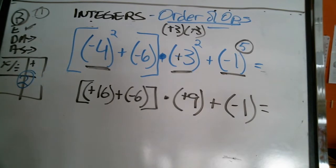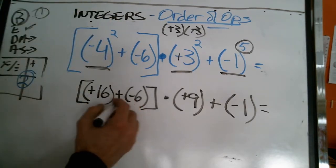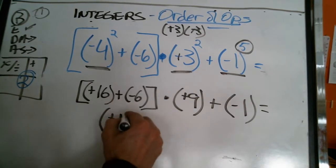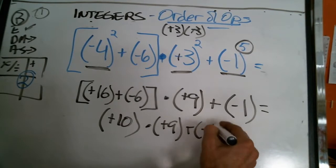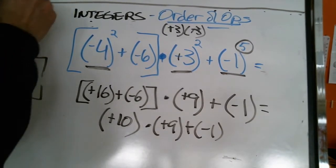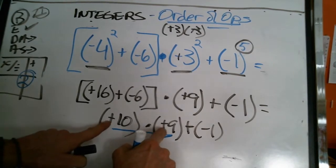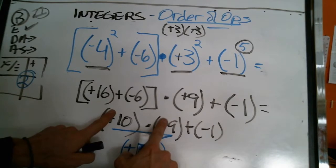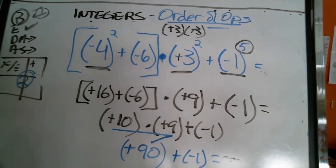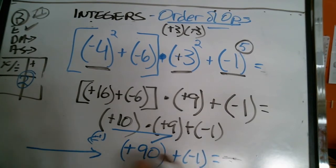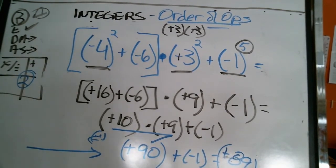Now which rules do we use — multiply or add? Boys and girls: 16 girls and only 6 boys — girls win, more by 10. So positive 10 times positive 9 — same sign — is positive 90, plus negative 1. Brackets and exponents are gone. Multiplication: 10 times 9 is 90. Now addition: 90 girls, 1 guy — girls win by 89. Final answer: positive 89.